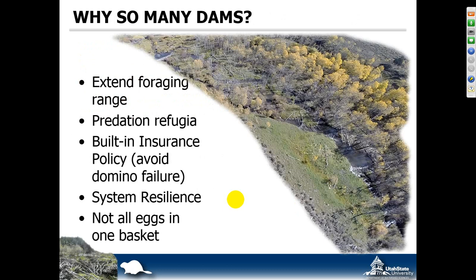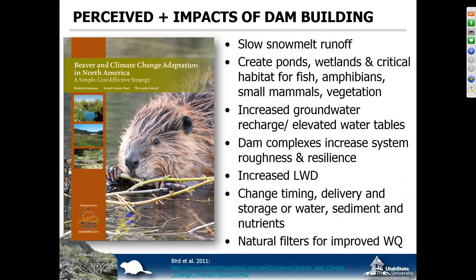Back to the idea of why beaver build so many dams. We mentioned it helps them extend their foraging range. Beaver are not very quick or graceful out of the water — they're easy prey — but when they're in the water they're very quick and graceful swimmers, and they can hide from just about anything. Having an extended range with lots of places to easily hide from predators is good. It's also a built-in insurance policy: if there are floods with minor breaches or even blowouts, when you have a complex network of dams it's unlikely you have a domino effect where they all fail. So it's a sort of insurance policy that builds in resilience.